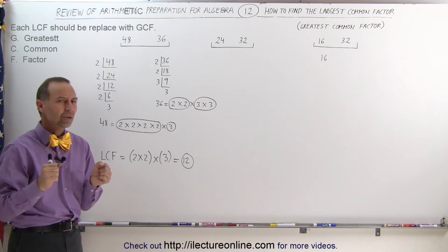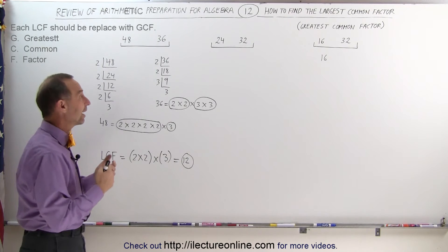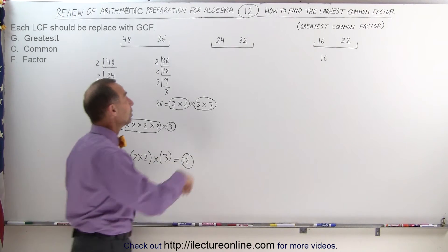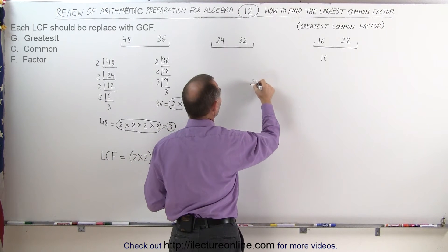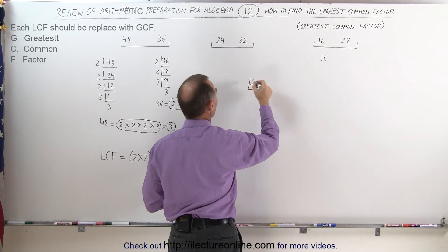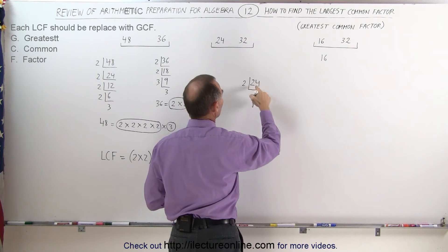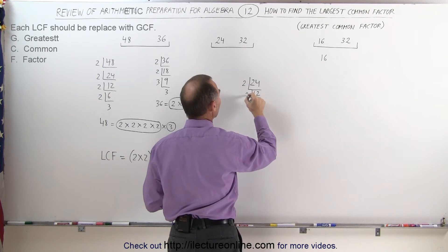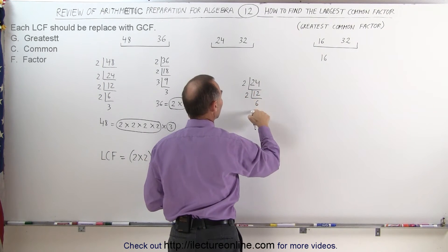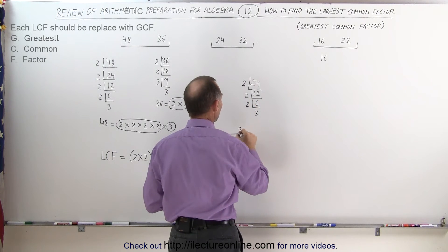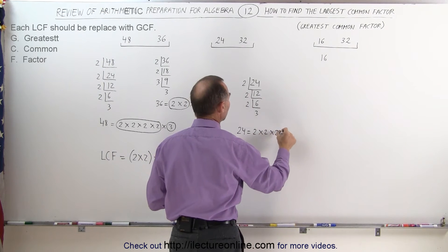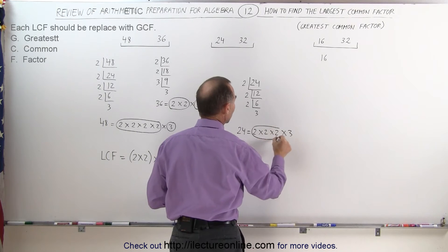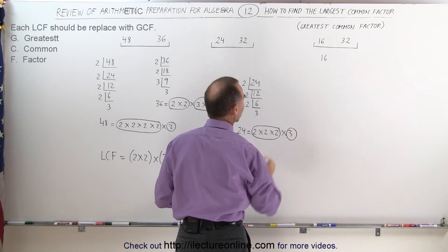Maybe you didn't quite catch that, so here's another example: finding the largest common factor between 24 and 32. We take 24 and divide it by the smallest prime number, 2. 24 divided by 2 is 12; divided by 2 again is 6; divided by 2 again is 3. So 24 can be written as 2 times 2 times 2 times 3, meaning we have three 2's and one 3.